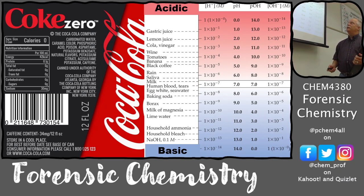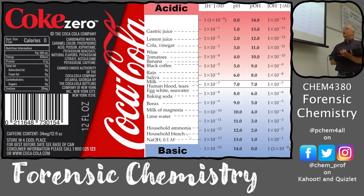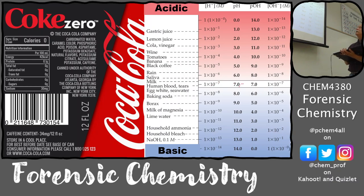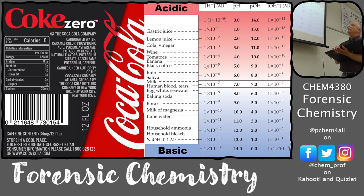Let's talk about acid-base and the pH scale. Common household materials range from very basic — household ammonia, bleach, sodium hydroxide, oven cleaner, lime water, milk of magnesia — down toward neutral. Baking soda is close to neutral, which sits at pH 7, where the hydronium ion concentration is 10⁻⁷ and its minus log equals 7.